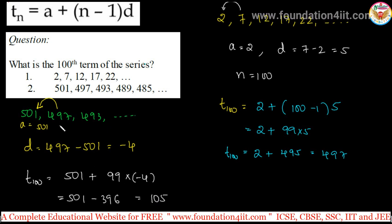105 is the 100th term because the series is decreasing. 501, 497, 493. The number is decreasing. You know, value will be reduced. If the series is increasing, value will increase here. The main thing is the formula: tn equals nth term. Not only 100, 50th term, 60th term, any term if you want to find out, apply formula directly: a plus n minus 1 into d.